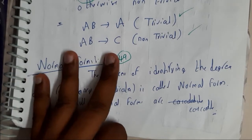So basically there are totally six types of normal forms. First normal form, second normal form, third normal form, Boyce-Codd normal form, fourth normal form, and fifth normal form.